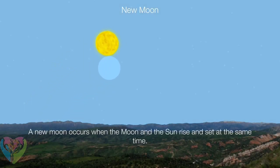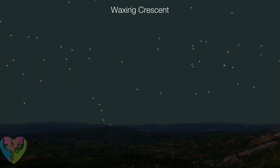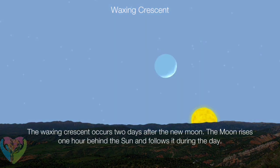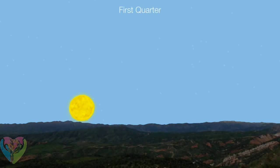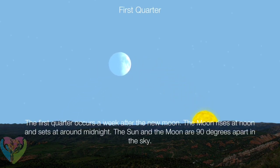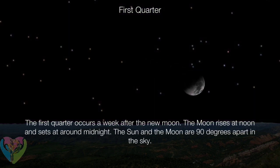A new moon occurs when the Moon and Sun rise and set at the same time. The waxing crescent occurs two days after the new moon — the Moon rises one hour behind the Sun and follows it during the day. The first quarter occurs a week after the new moon; the Moon rises at noon and sets around midnight, with the Sun and Moon ninety degrees apart in the sky.